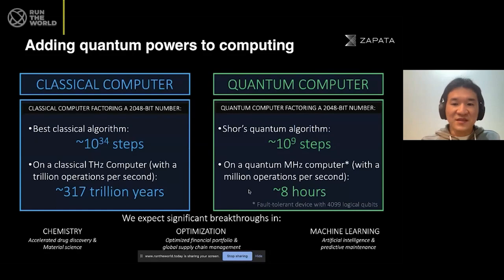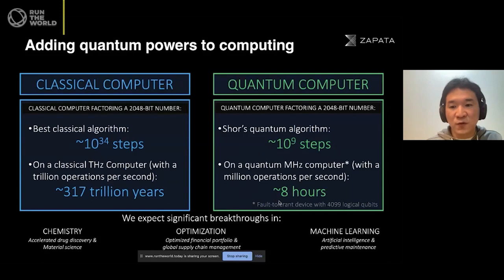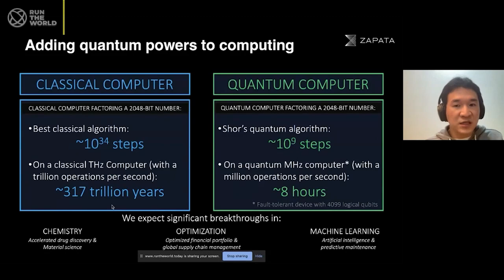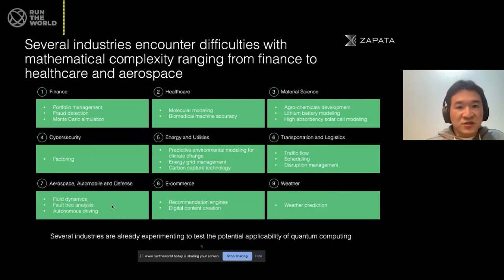Now, this is assuming that we have a fault-tolerant quantum computer having 4,099 logical qubits. We're not even close to that point, but in theory in the future we can build something like this. And we expect significant breakthroughs in chemistry, optimization, and machine learning with quantum computers. Those three areas are known to perform better and eventually will have what's called quantum advantage — where quantum computers outperform classical computers. Several industries encounter difficulties with mathematical complexity, ranging from finance to healthcare and aerospace.